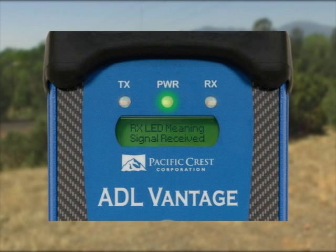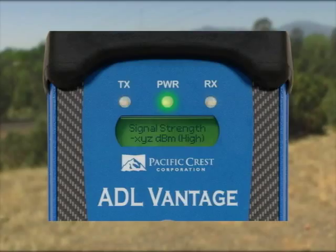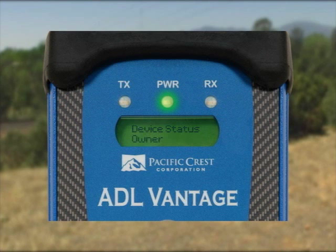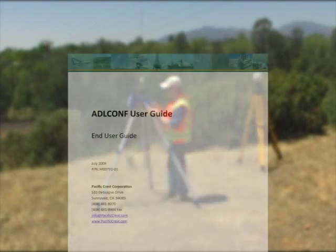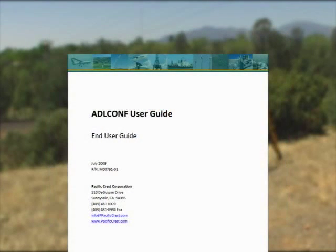You can see the meaning of the receive LED and the signal strength. You can also view the battery status and the serial number. The following information can be seen on the radio but is only configurable with ADL Conf: owner and call sign. Refer to the ADL Vantage user's guide for the factory default settings.